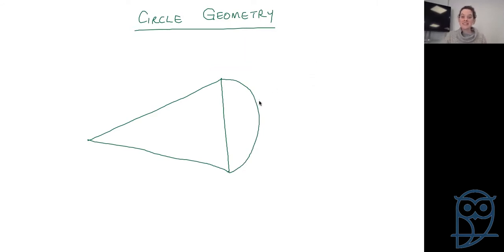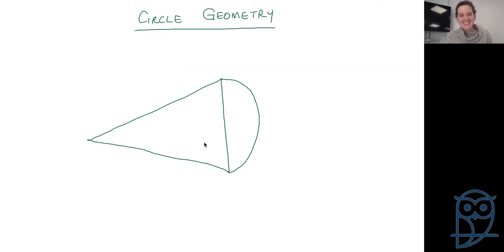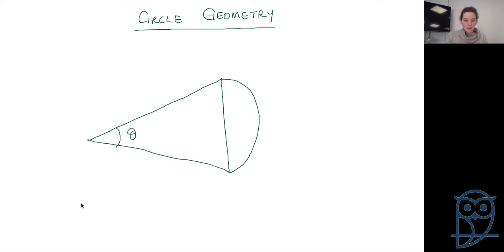So this is a sector — it's a slice out of a circle, a slice of pizza. Circle geometry is a good one to relate to food. The angle here in the middle we call theta — that's the angle within our sector. This whole thing we're going to call a sector.